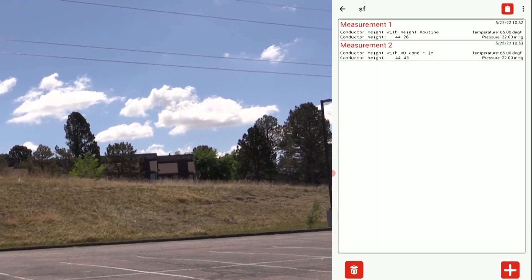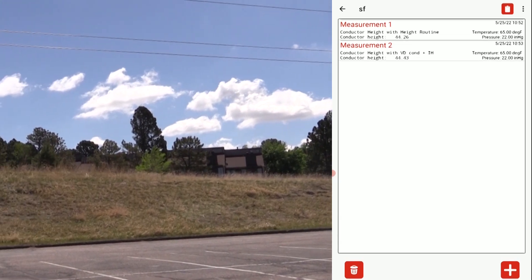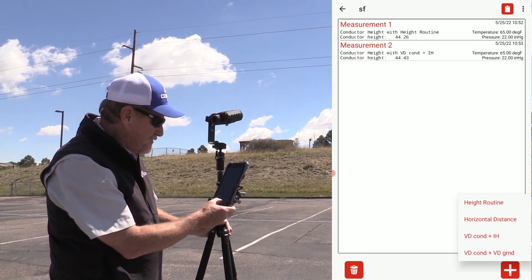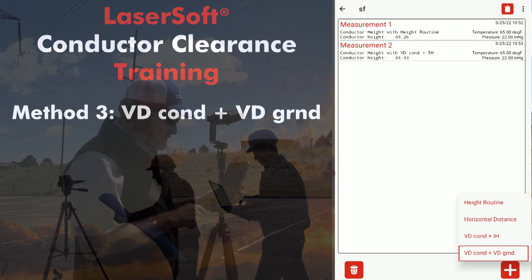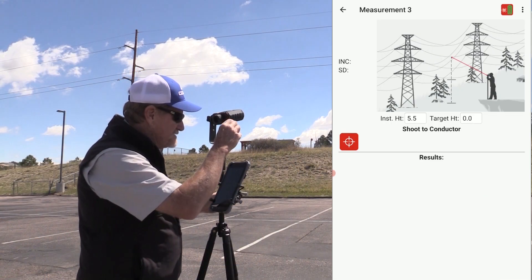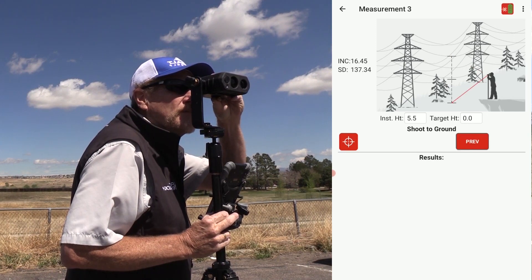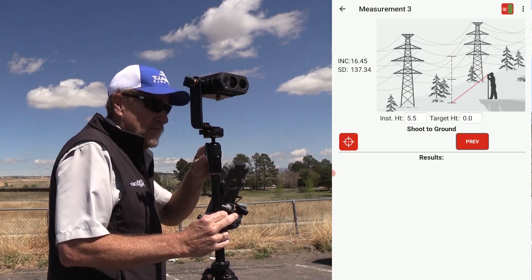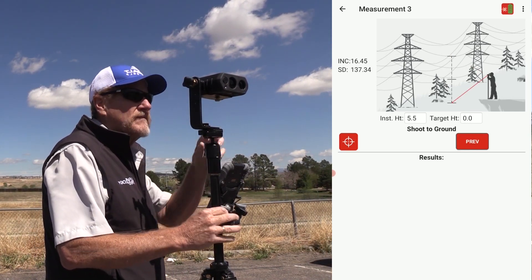Now let's say it's not flat between here and there — there's a slope on the parking lot, probably for drainage. I can go back to conductor height and choose vertical distance to conductor plus vertical distance to ground. I'm assuming the ground underneath the wire is flat, so I'll make that selection. The diagram tells me to shoot to the wire and then shoot to that spot on the ground underneath the wire.